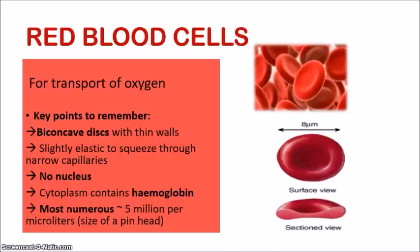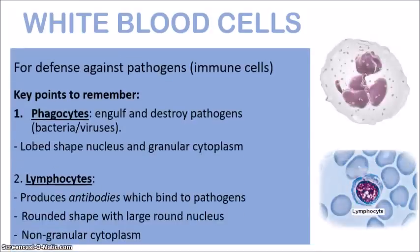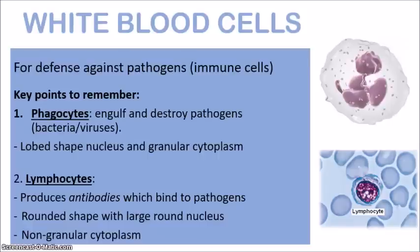Now let's look at the white blood cells. White blood cells are known as the immune cells — they are there for defense against pathogens. Pathogens are any microorganism that enters the body, including viruses, bacteria, fungi, and worms — anything the body should not have. White blood cells are responsible for fighting against these pathogens and getting rid of them, which is why they are an important part of the immune system. There are two types: phagocytes and lymphocytes. Phagocytes are responsible for engulfing and destroying pathogens — they are like the pathogen eaters, engulfing bacteria and viruses.